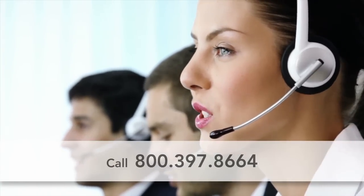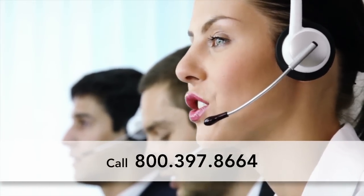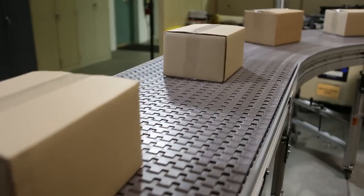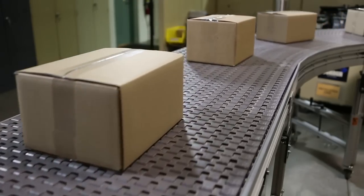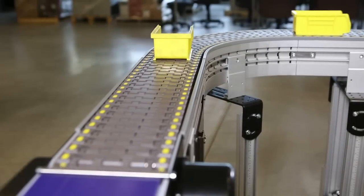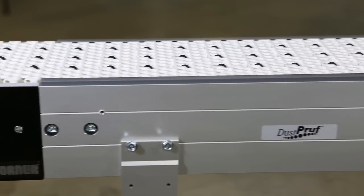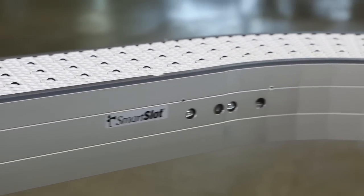Talk to a Dorner representative today to find out if the 3200 Modular Belt Conveyor is the right solution for your facility. With a sleek design, heavy load and high-speed capabilities, and the option for up to 4 curves on a single conveyor, Dorner's 3200 Modular Belt Conveyor is the perfect combination of functionality and flexibility.